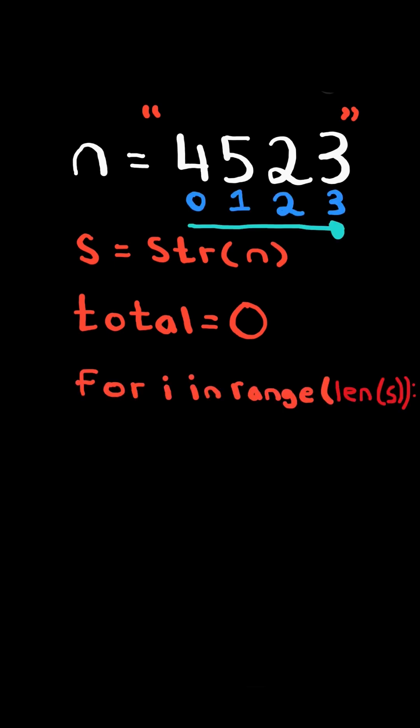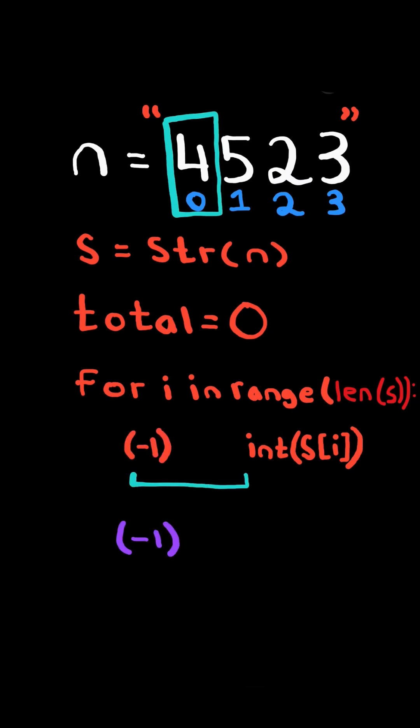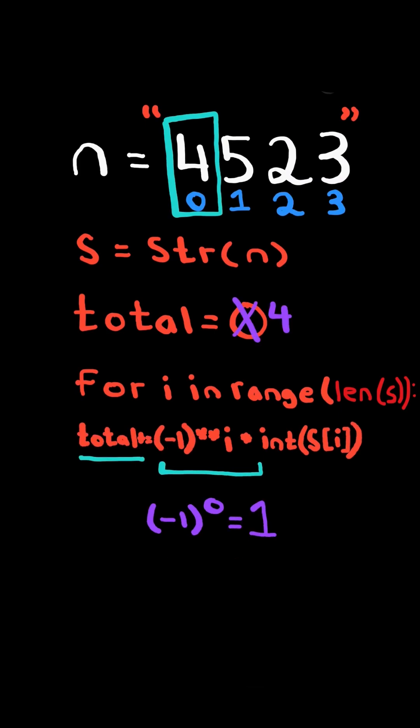We will iterate through the indices of the string. We take the digit and convert it to an integer. Now to get its corresponding sign, we take negative 1 and raise it to the power of i. This gives us a positive sign and we add this to total.